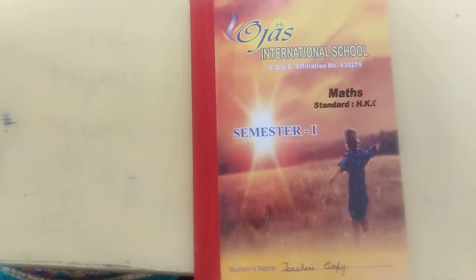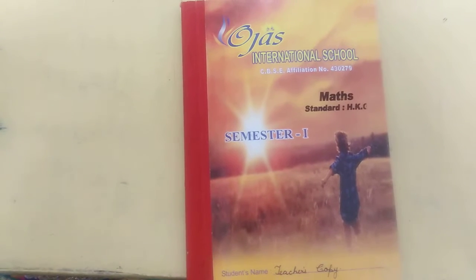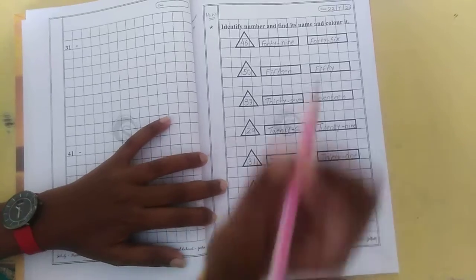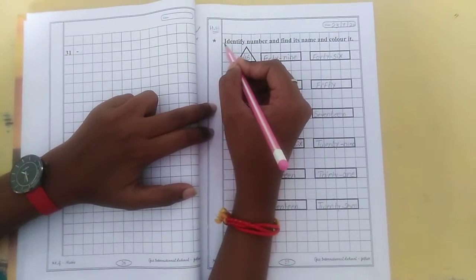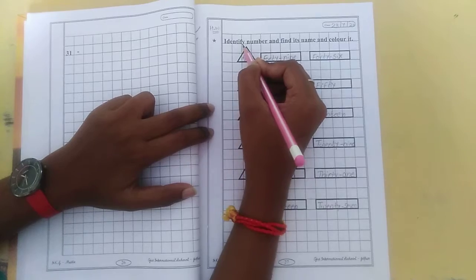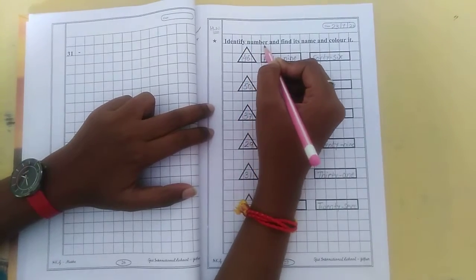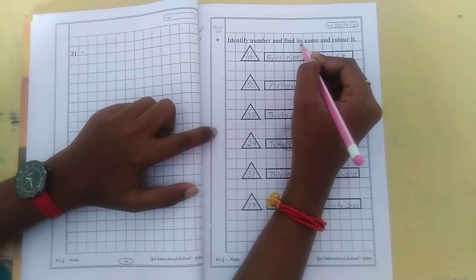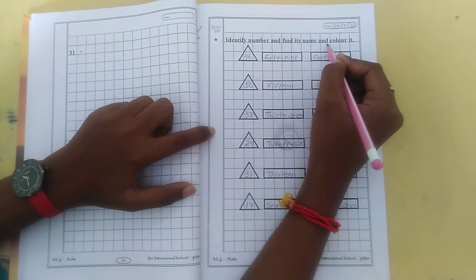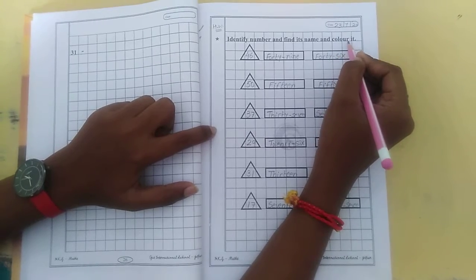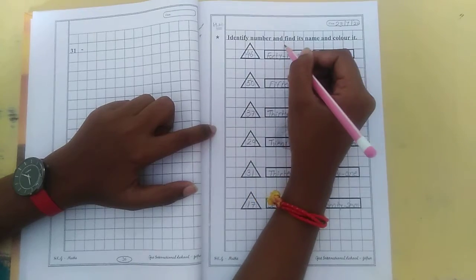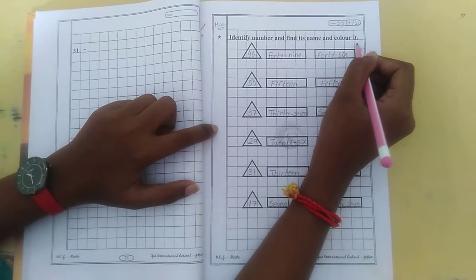So in the maths we already learned 1 to 50 number names, right? So on the basis of that, today we are going to do activity. So in your maths notebook, page number 27, what is given here? Let us read. It means identify number and find its name and color it.